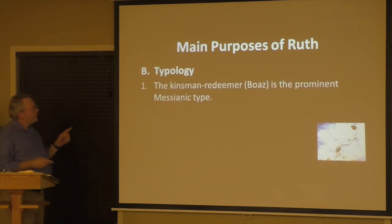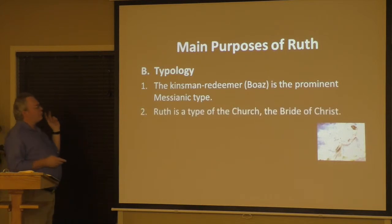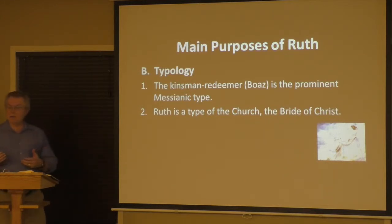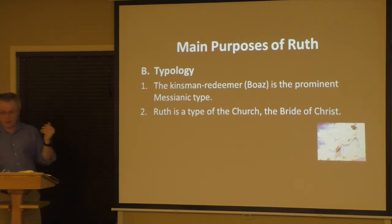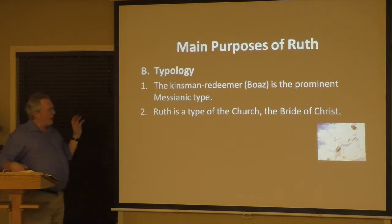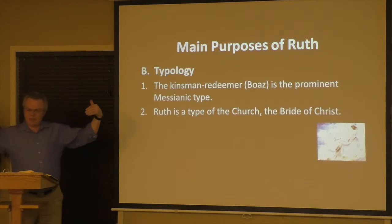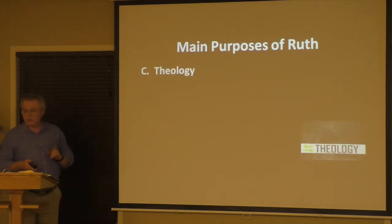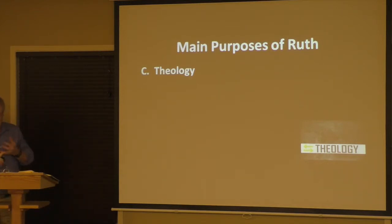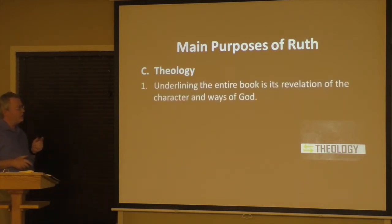Typology is another main purpose. The kinsman redeemer — Boaz — is the prominent messianic type. We would say Ruth is a type of the church. The New Testament, especially Revelation, talks about the church being the bride of Christ — the bride being prepared for her groom. Those are symbols of the church in its relationship with Christ. So Boaz is a type of the Messiah, Ruth is a type of the church, and their coming together typifies Christ and the church coming together.